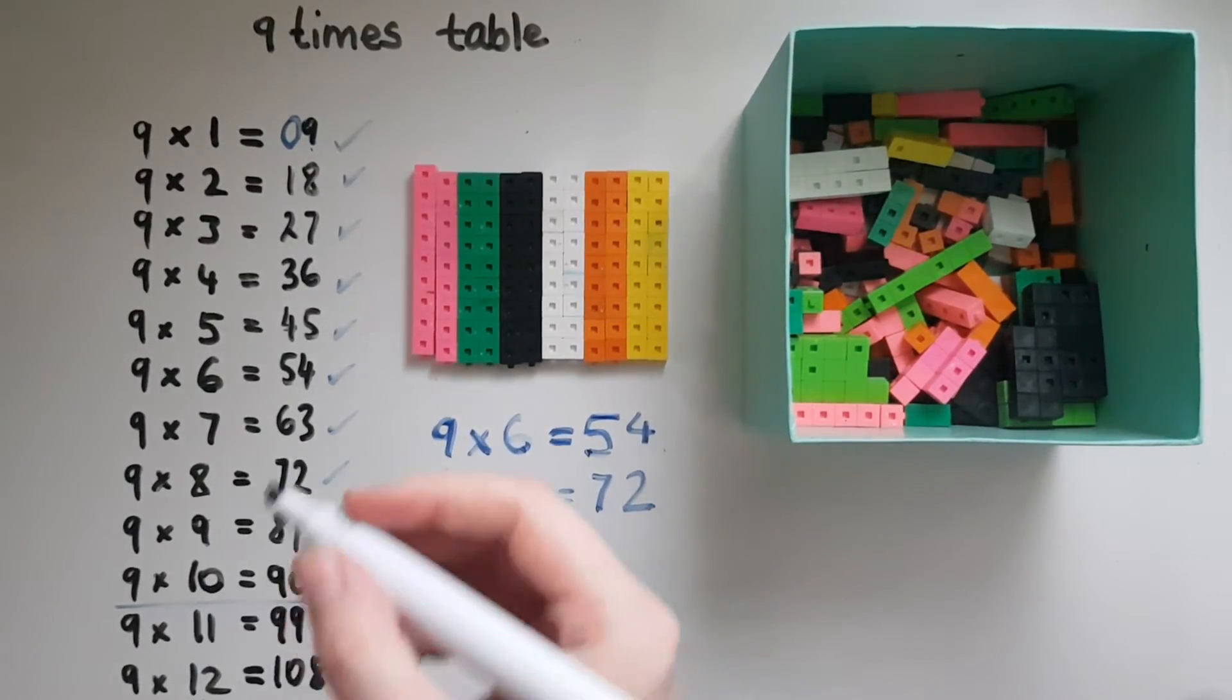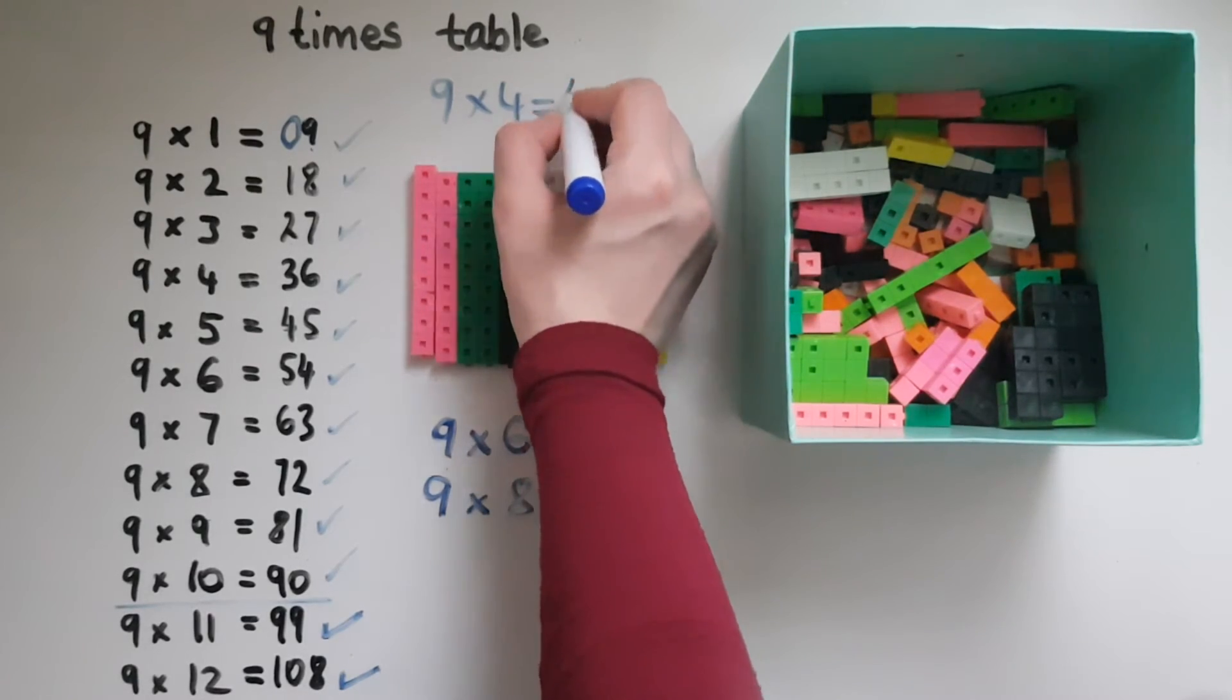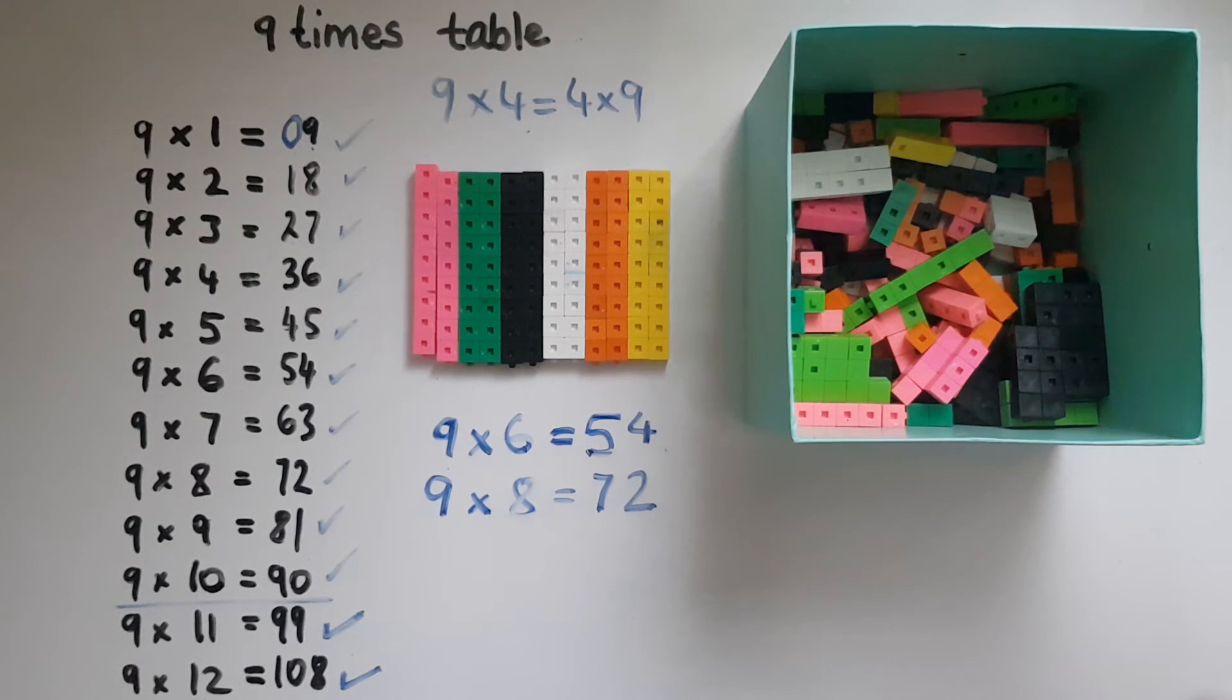Since we also know that 9 times 4 is the same as 4 times 9, we can use this trick with all of the other times tables when it comes to multiplying them by 9.